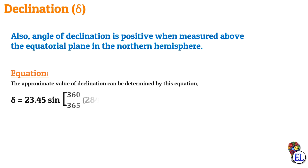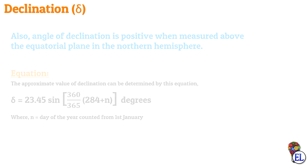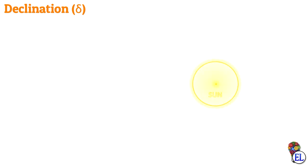The approximate value of declination can be determined by this equation, where n is the day of the year counted from 1st January. Let us explore this more now.